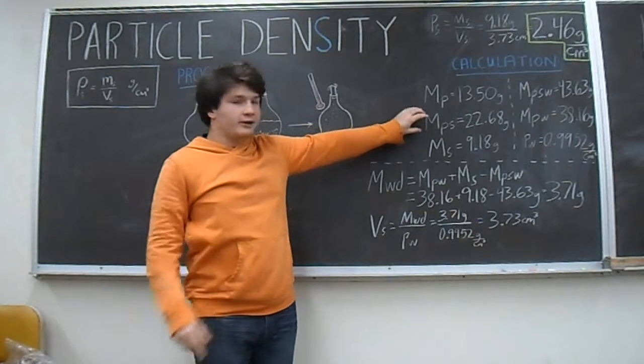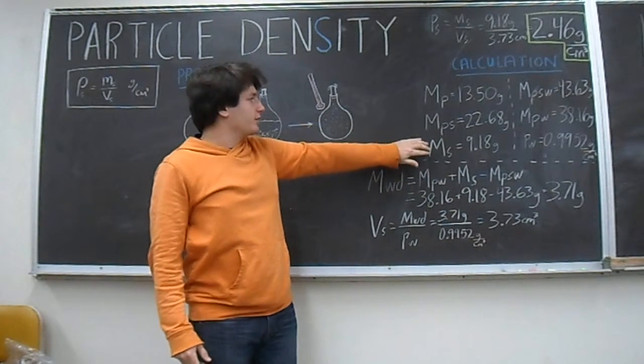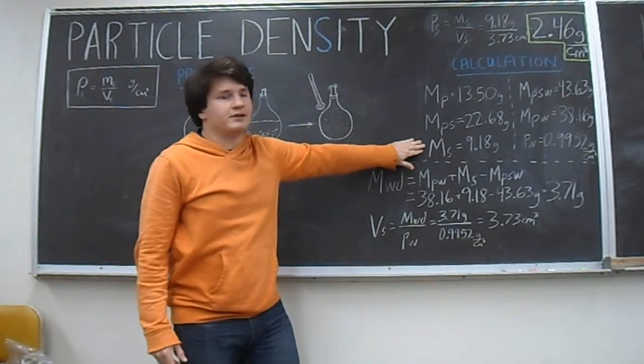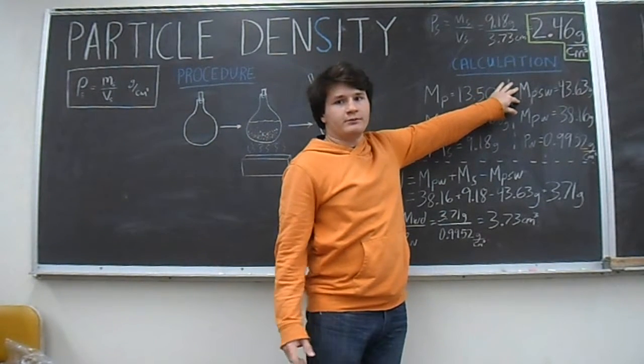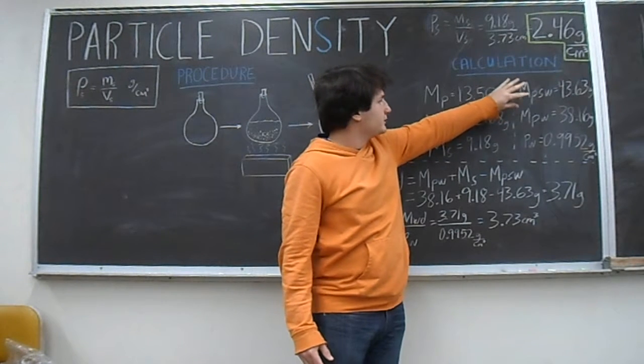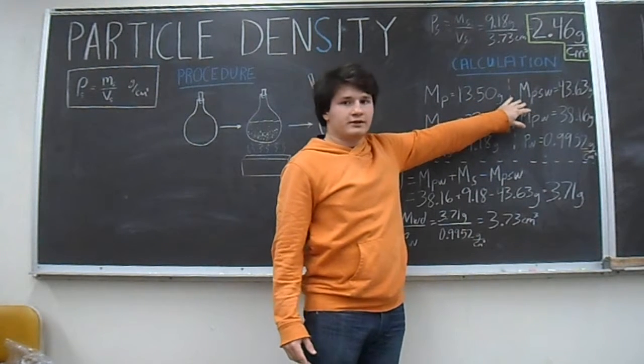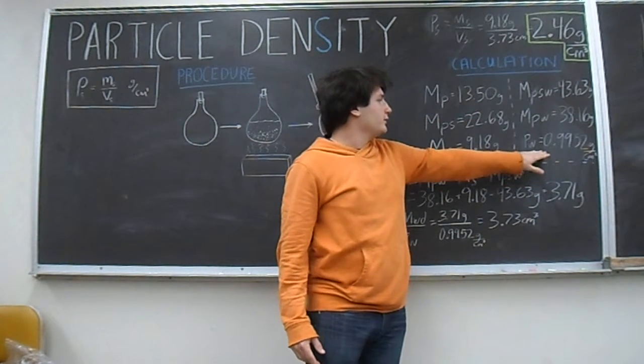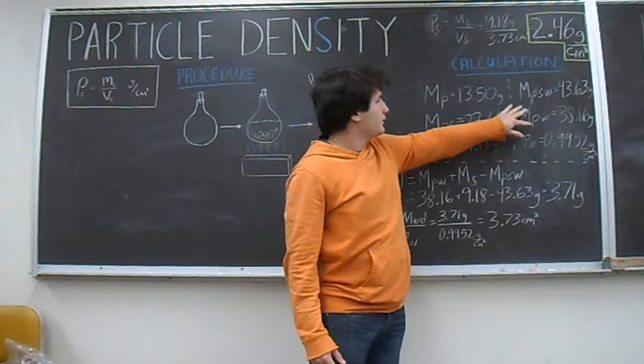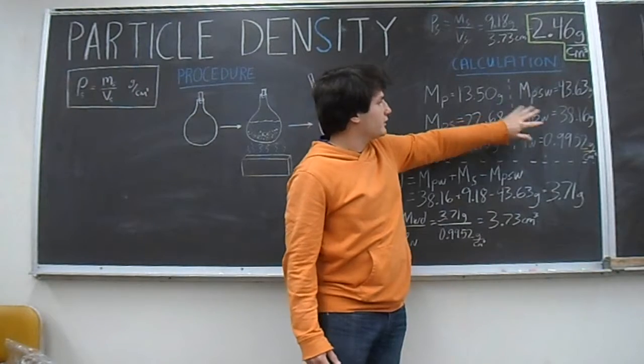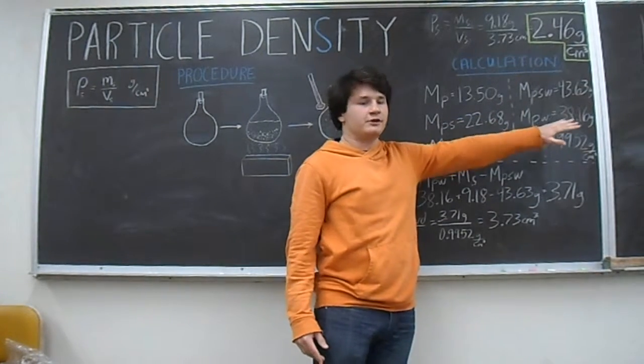After massing the pycnometer and the pycnometer with soil, you can then find the mass of the soil by itself. Then you fill the pycnometer with water, and you can find the mass of everything combined. After you empty it and take the temperature of the water, you can use a chart to find the density of the water at that temperature. Then you refill the pycnometer with water and take the mass of the pycnometer with just the water.